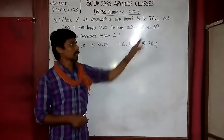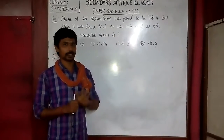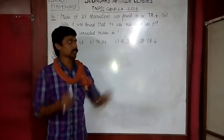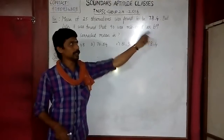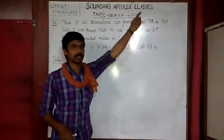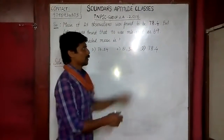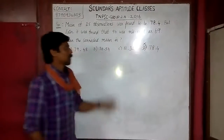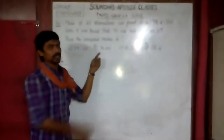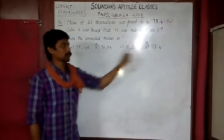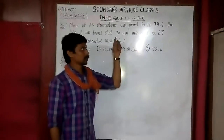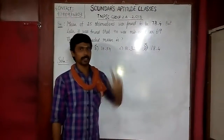The original value of 96 was recorded as 69. Since the correct value is larger, the number increases, so the mean will also increase. The answer is either A or C, because the value increased and the average increased.